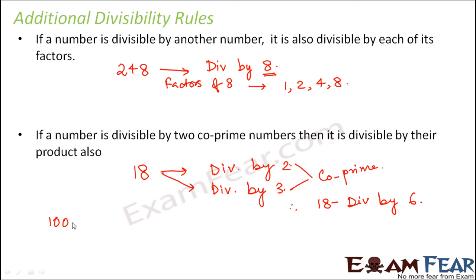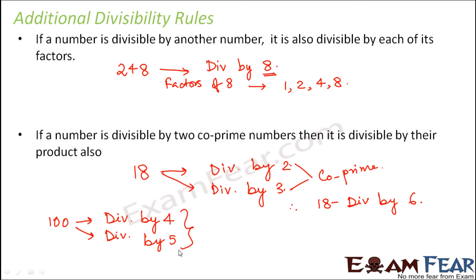Let us take another example with the number 100. 100 is divisible by 4, and 100 is also divisible by 5. Since 4 and 5 are co-prime numbers — they have only one common factor, which is 1 — therefore 100 will also be divisible by the product of 4 and 5, that is 20.